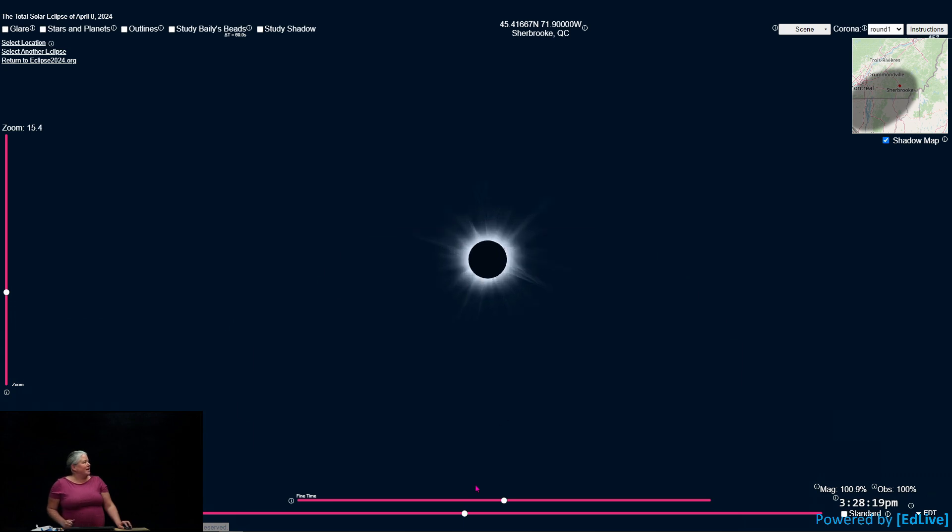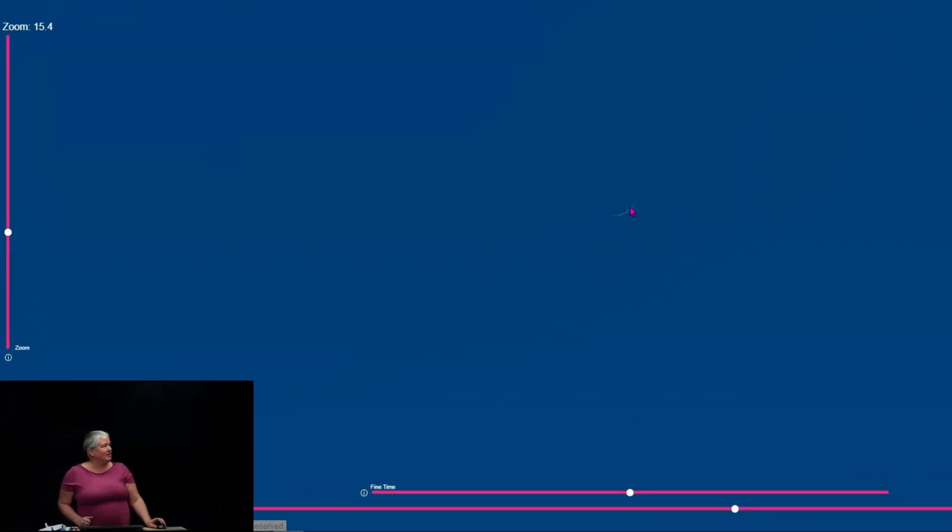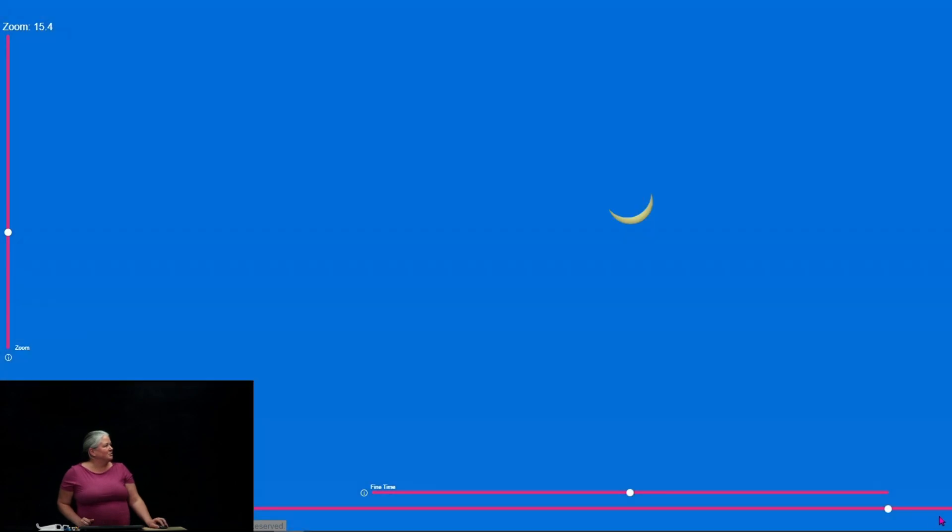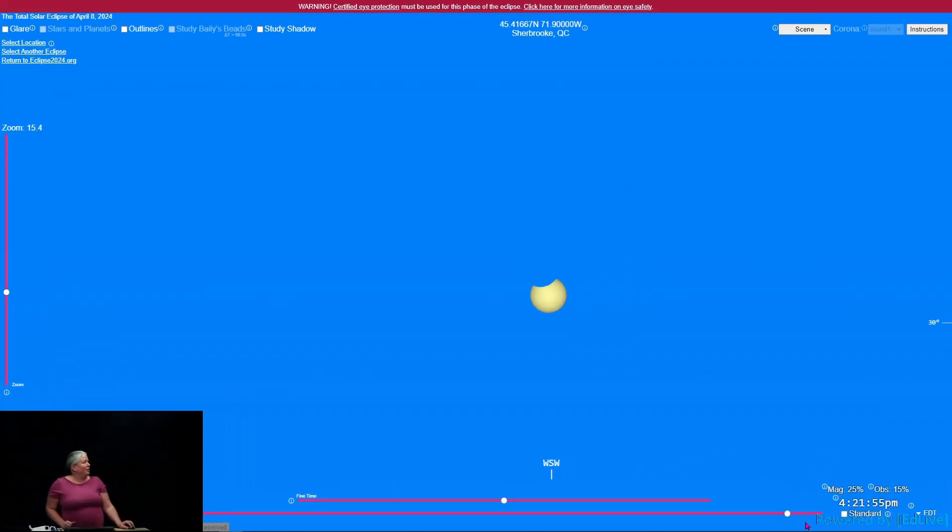But it only lasts a few minutes. It's not very long. As soon as it's over, as soon as the Sun reappears from behind the Moon, you need to put your glasses back on. So as soon as we have a tiny crescent Sun, you put these back on. Again, partial eclipse, you wear the glasses. And then the partial eclipse will progress until the Moon is completely off the Sun, and we're back to just a sunny day.